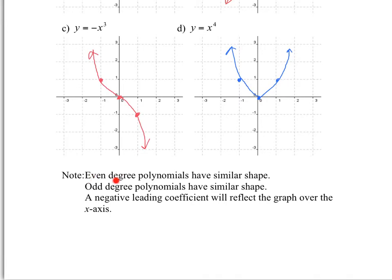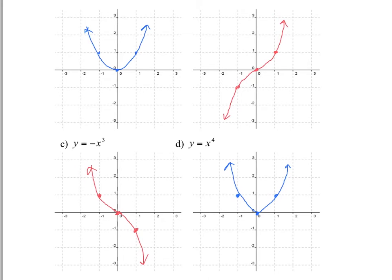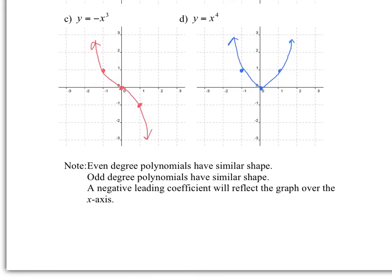A couple of things to note: even degree polynomials have similar shapes — x squared and x to the fourth are very similar. Odd degree polynomials have similar shapes. And when you have a negative leading coefficient, it will reflect the graph over the x-axis.